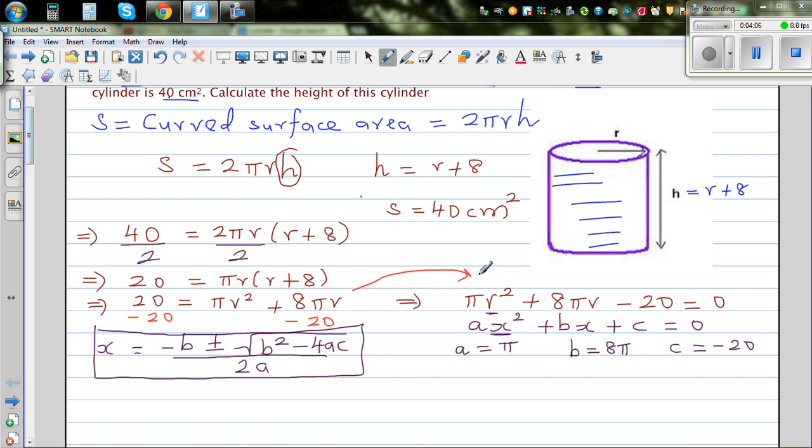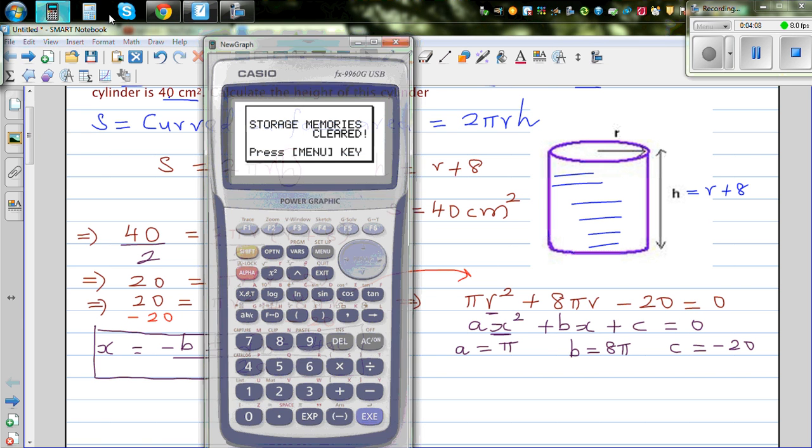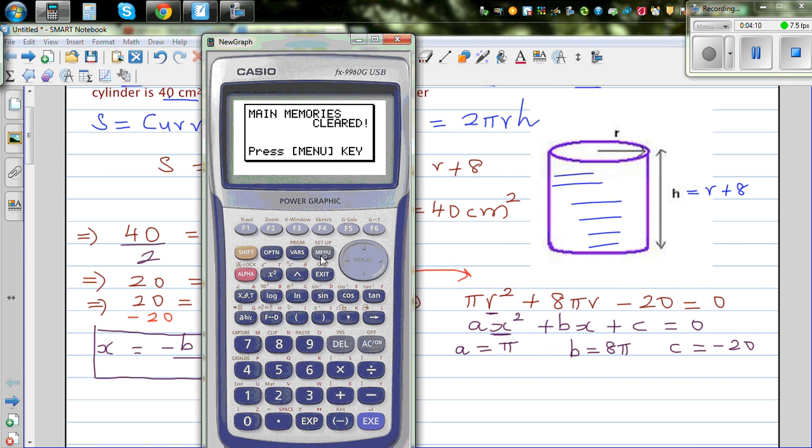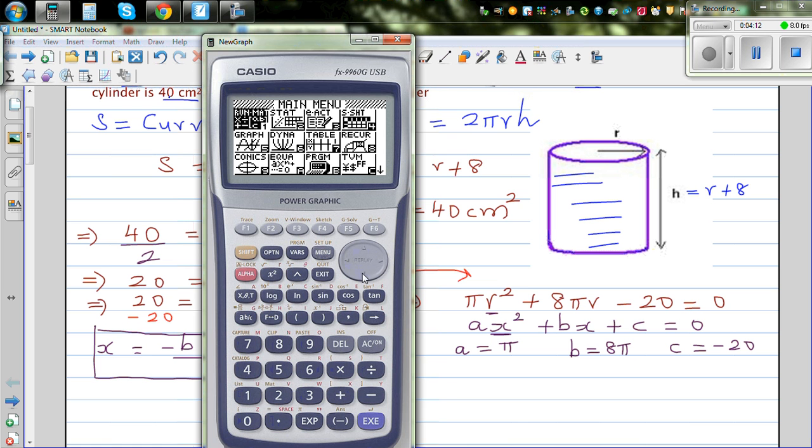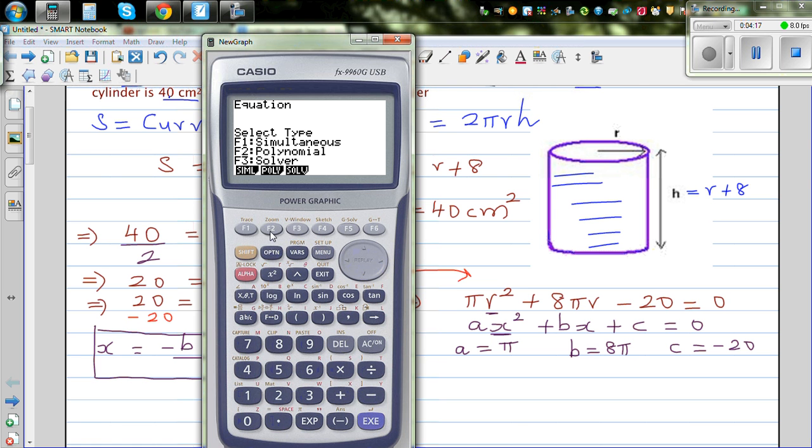But if you have a graphic calculator, you can just substitute. Go to the equation menu, go to polynomial, and the second degree. A is π, so you enter shift π, enter. Your b is 8π, so 8 shift π. And your c is minus 20. And then you go to solve.